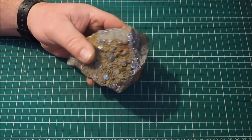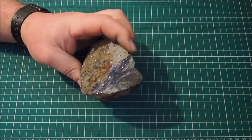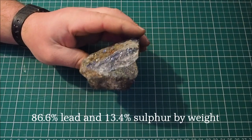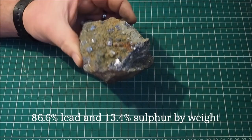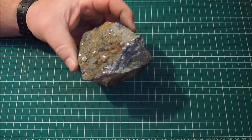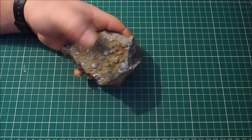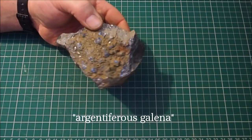A typical specimen of Galena is about 86% lead, 14% sulphur by weight. However, some of the specimens of Galena contain up to a few percent of silver by weight. These are called Argentiferous Galena because of their silver content.